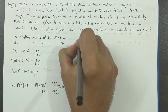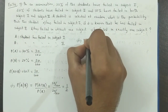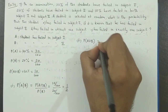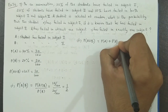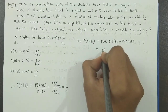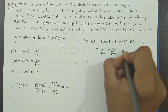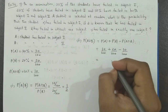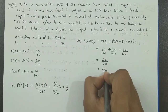The second case asks: he has failed in at least one subject. 'At least one' indicates union — that is A or B or both. So P(A union B), by the addition theorem, is P(A) plus P(B) minus P(A intersection B). That is 30 by 100 plus 20 by 100 minus 10 by 100, which gives 30 plus 20 minus 10 = 40 by 100, which is equal to 2 by 5.